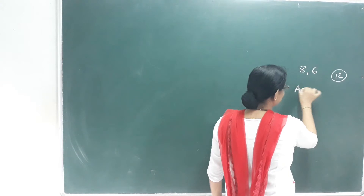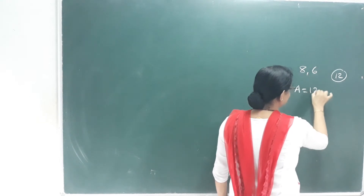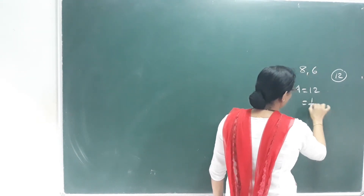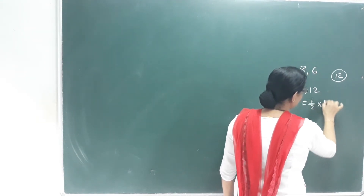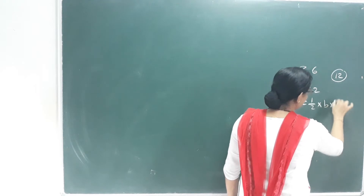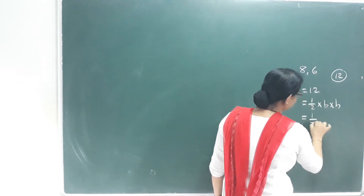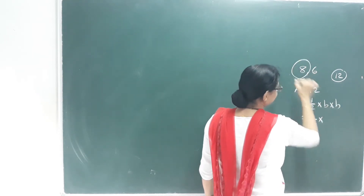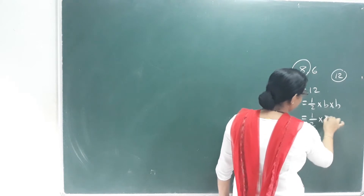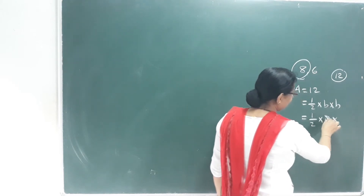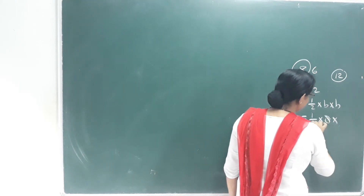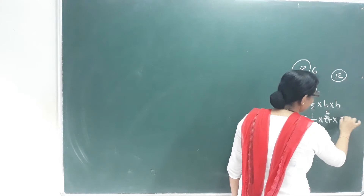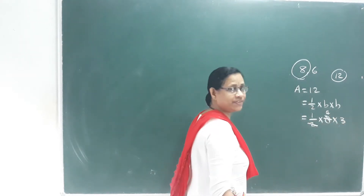Here I have an area of 12. The area equals half base times height. I have base 8. So half of 8 is 4, then 4 times height equals 12, so height equals 3.